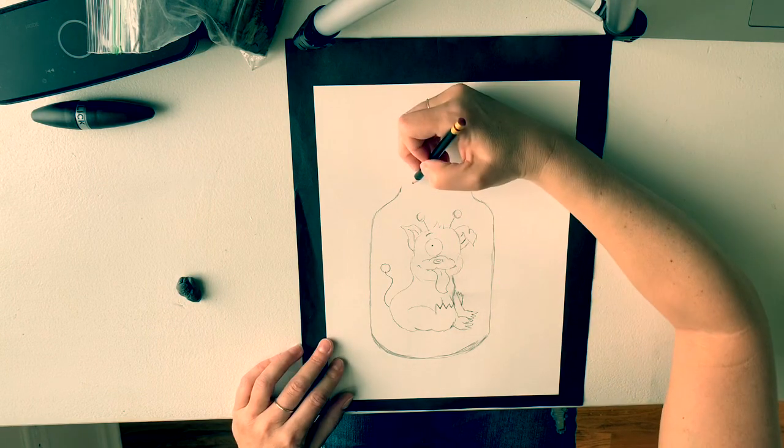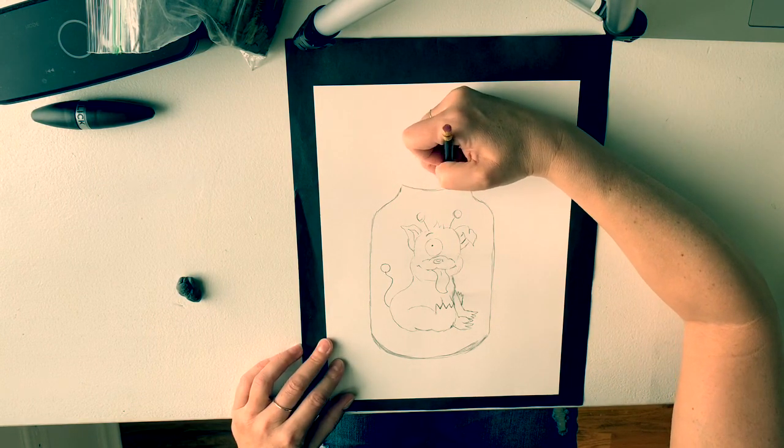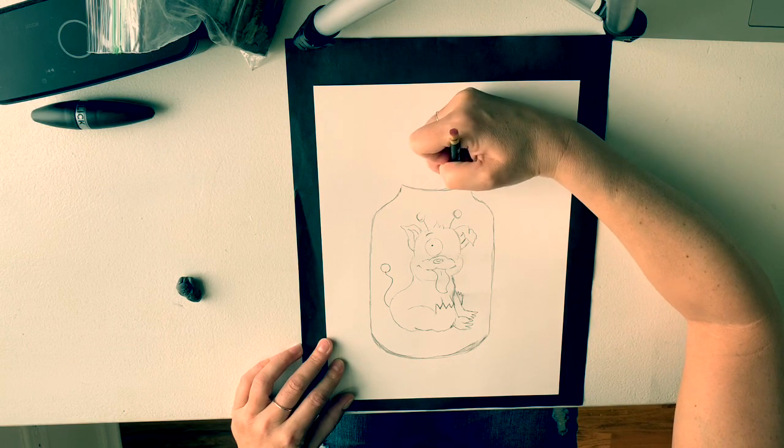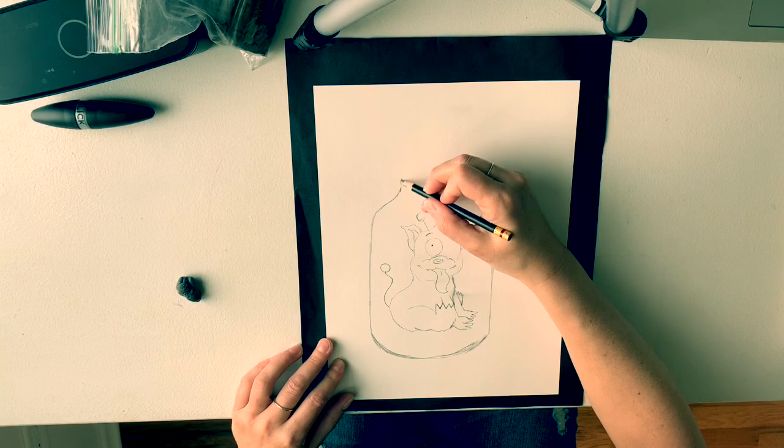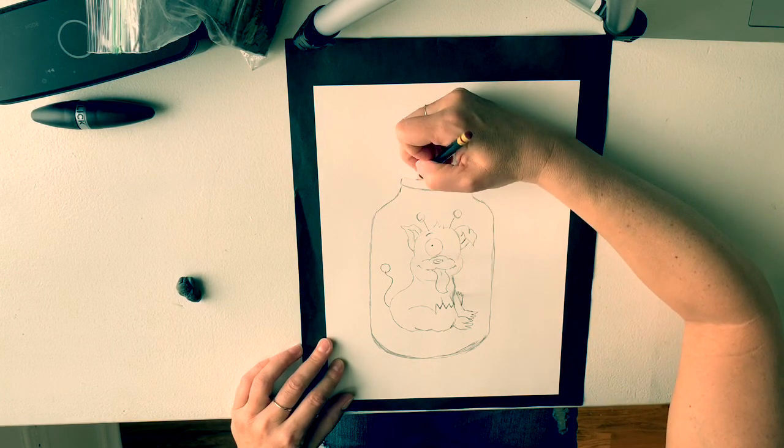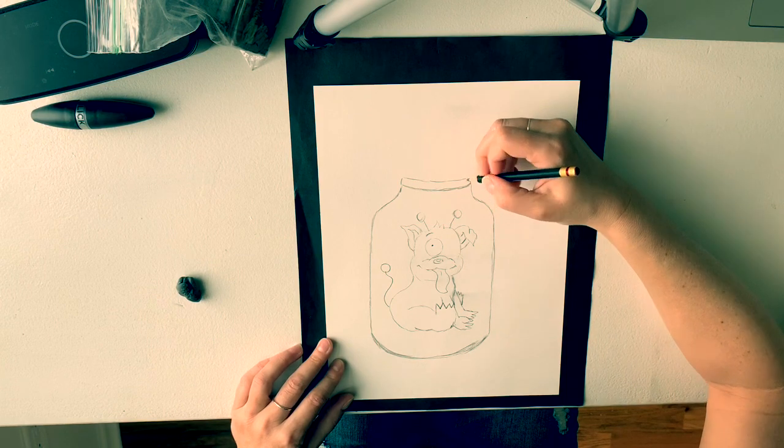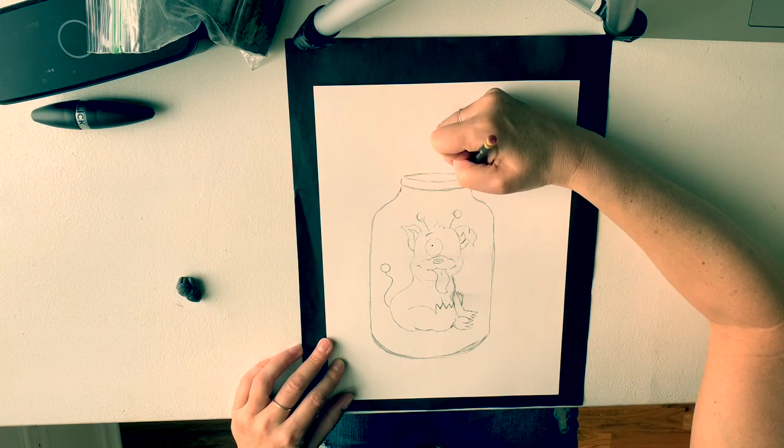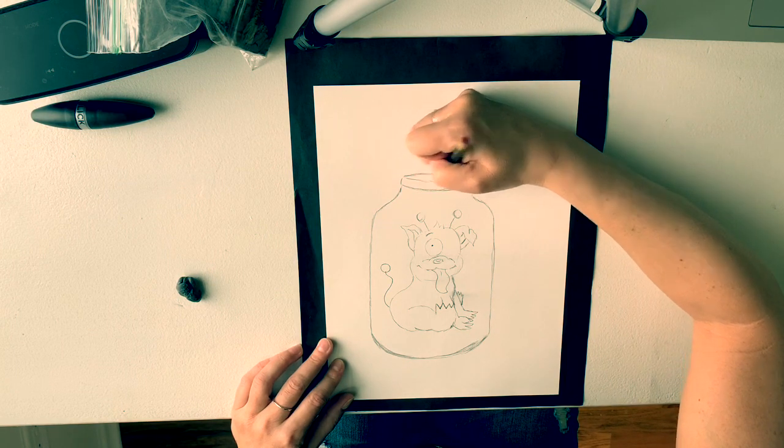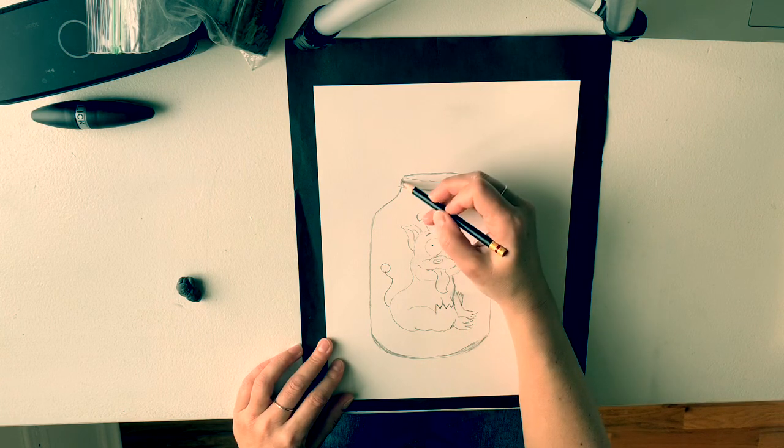Also for the top of the jar to make a lid, you're going to curve that on an angle down too. So you don't want lines going straight across. You want to just kind of curve them down a little bit. I'm going to make a second curvy line. And then the top, I'm going to curve the other way. So now I have my monster in a jar.